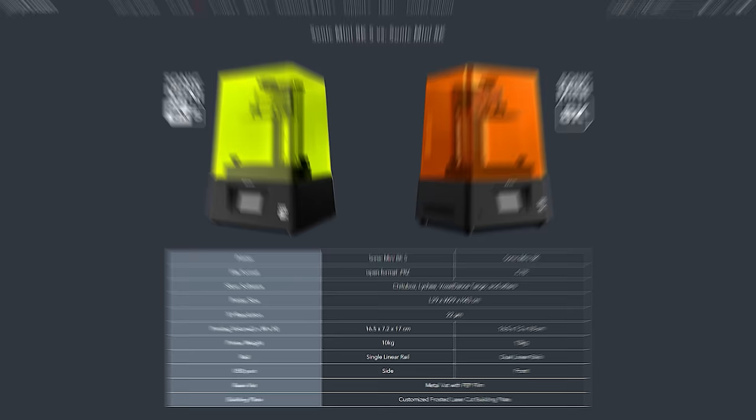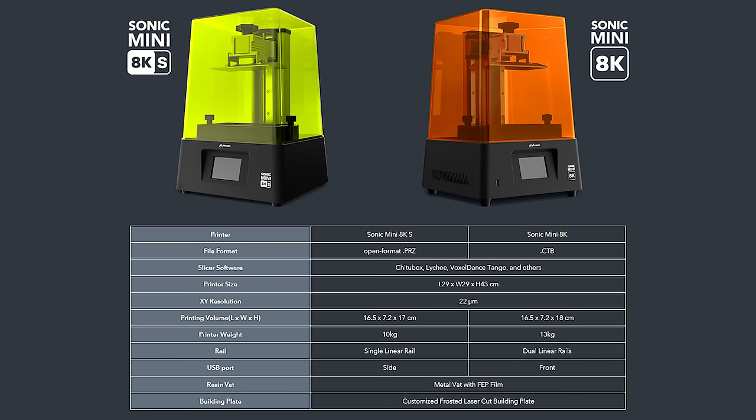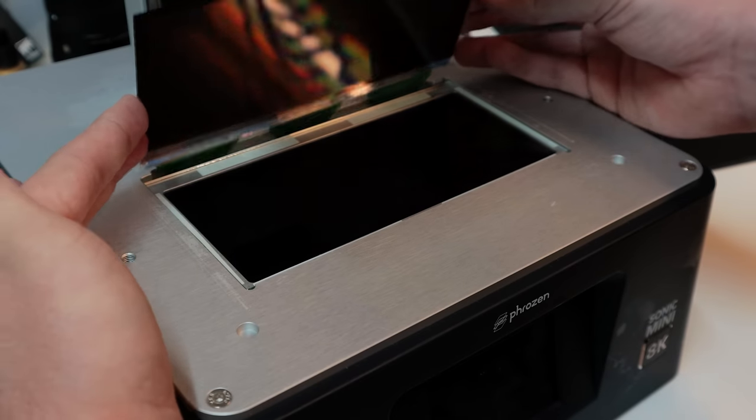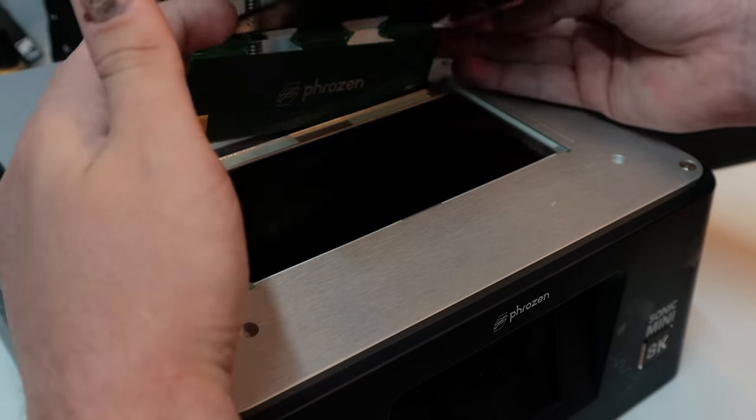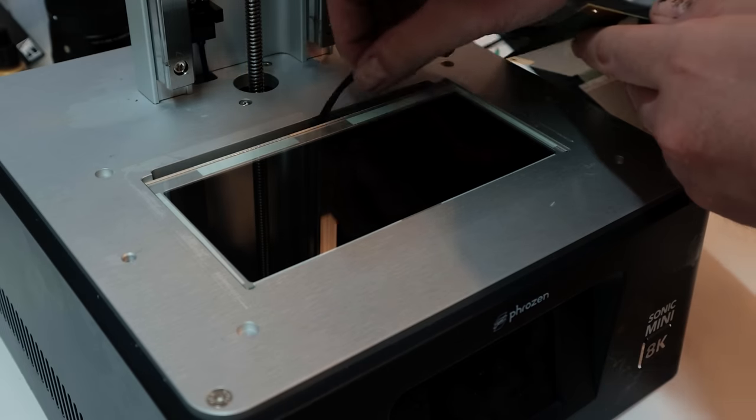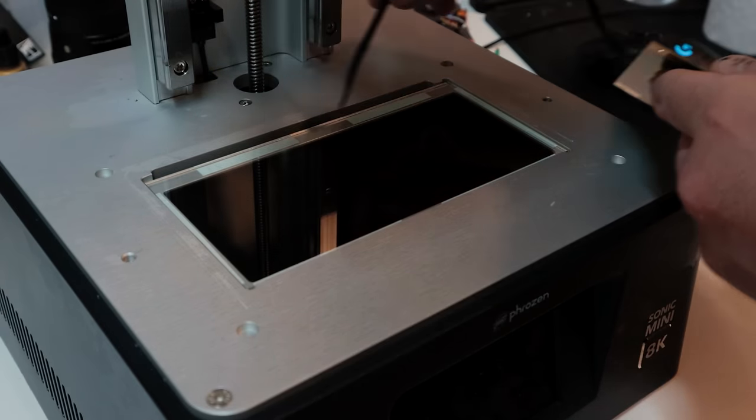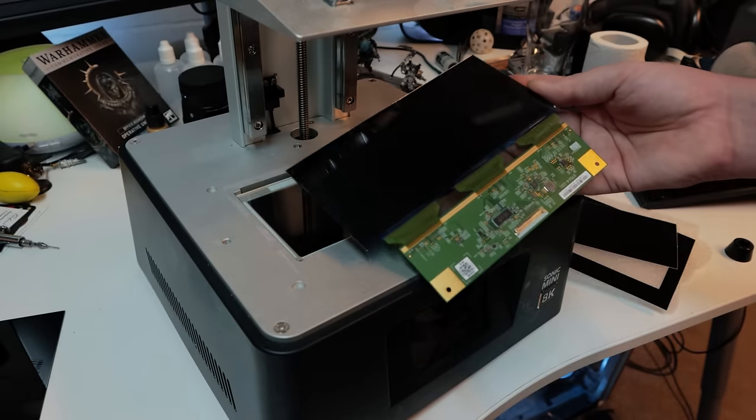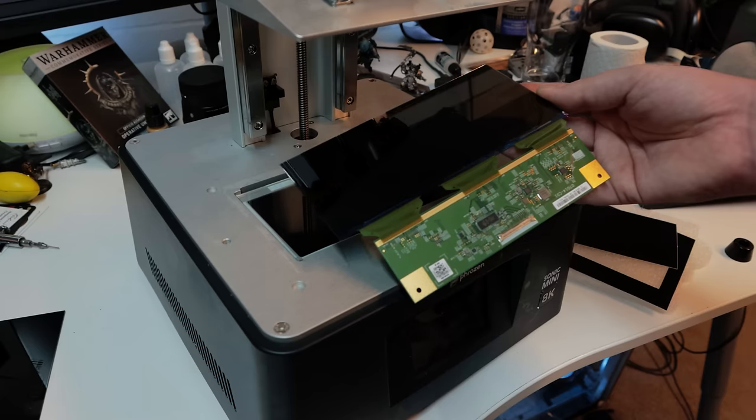On paper though, the printers are fairly similar. They both have exactly the same screen resolution and same screen size, so your printing volume is 16.5 by 7.2 by 17 centimeters. That's one centimeter shorter in height than the original Sonic Mini 8K. But the main practical difference I saw is that when I got my Sonic Mini 8K, I had technical issue after technical issue. And that happens - it happens with all the brands. On every video I see, I see people saying I won't buy from this brand again because I had X issue, but I see that with every brand.